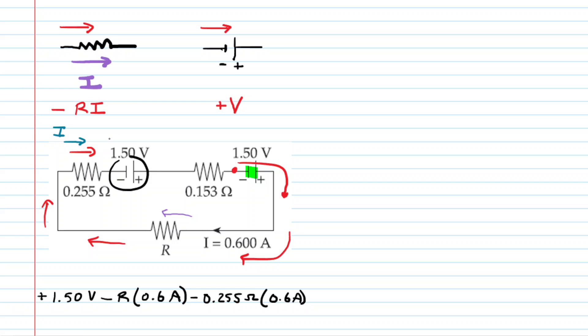Next, we encounter the battery. We're moving to the right. It's from negative to positive terminal. That'll be a positive potential change, so positive 1.5 volts once again.